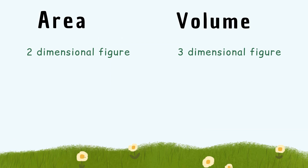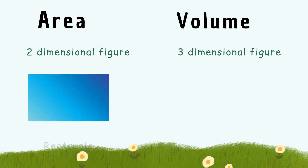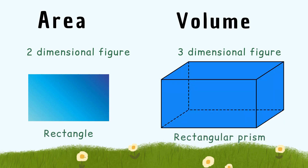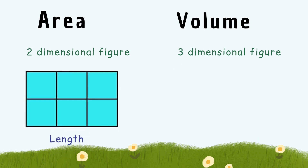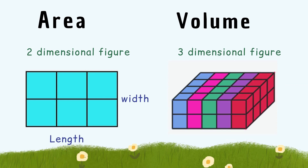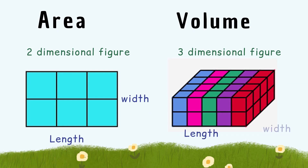A rectangle and a rectangular prism are related because of their shape and dimensions. A rectangle has two dimensions: length and width. A rectangular prism has three dimensions: length, width, and height.